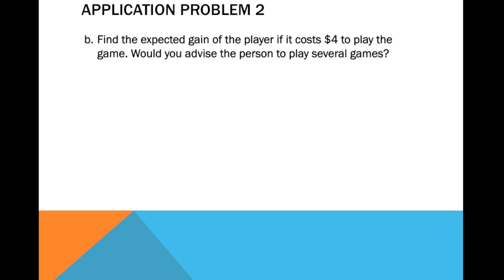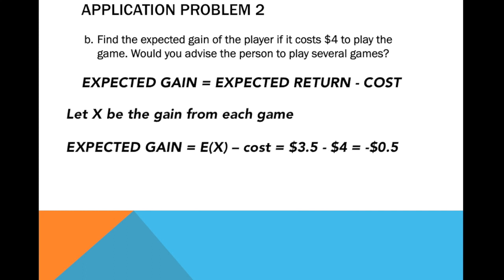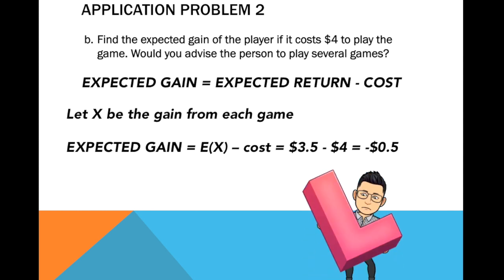For part B, find the expected gain if it costs four dollars to play. Using the formula — expected gain equals expected return minus cost — we get 3.50 minus 4 dollars, which equals negative 0.50 dollars. Would you advise the person to play? Definitely not, because the expected gain is negative, meaning it is a loss.